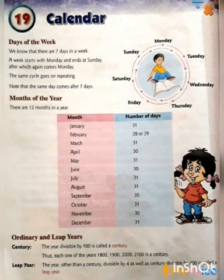The third month is March, with 31 days. April has 30 days. May has 31 days. June has 30 days. July has 31 days. August has 31 days. September has 30 days. October has 31 days. November has 30 days. And December has 31 days.